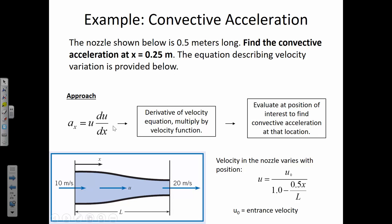The velocity is u-naught divided by m, or equivalently u-naught times m to the minus 1 power since it's in the denominator. So du/dx becomes the derivative of u-naught times m to the minus 1 with respect to dm, multiplied by the derivative of m — substituting in that m equals 1 minus 0.5x divided by L — with respect to dx.